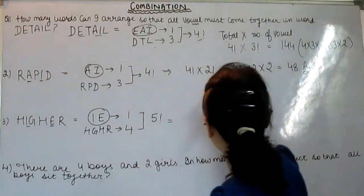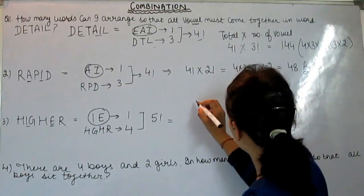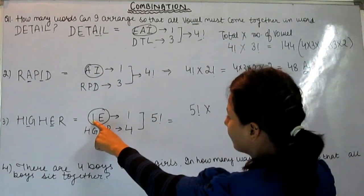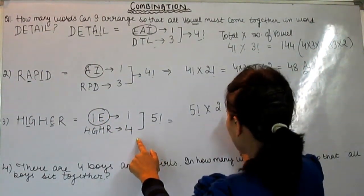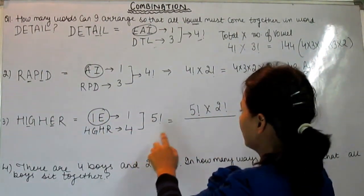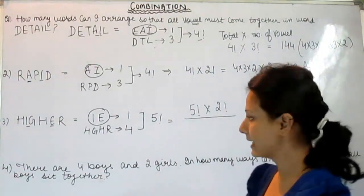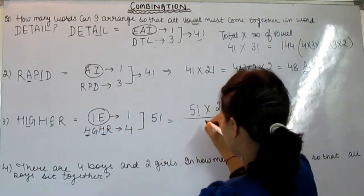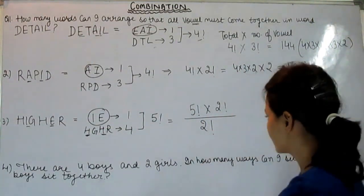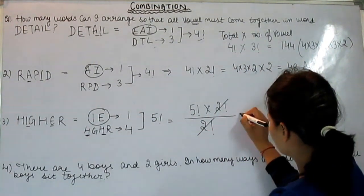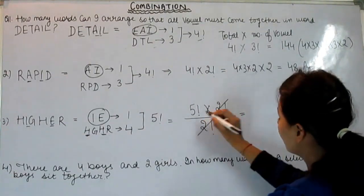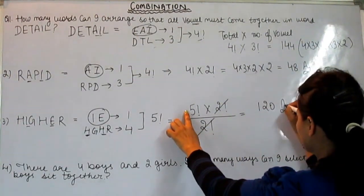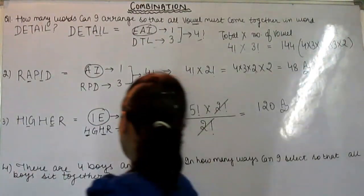Our trick is total, that is 5 factorial into number of vowels. We have two vowels, so 2 factorial. But we have a slightly different thing here because H is common. Common letters we divide by factorial. 5 factorial into 2 factorial divided by 2 factorial and divided by 2 factorial.